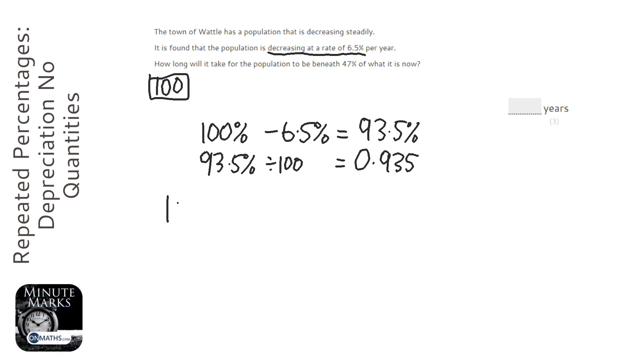So we've got our 100, and what I want to do is figure out how many times I need to multiply it by 0.935. So there's a power here which we don't know yet.